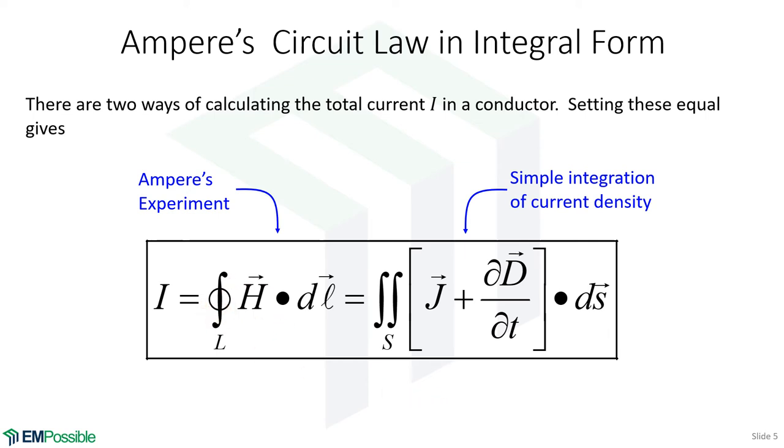We can either integrate the magnetic field around some closed contour line, or we can integrate the cross section in that closed contour line, integrate the total electric current, the flux of that total electric current.